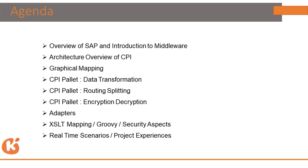We will learn about graphical mapping. In CPI we have a palette known as message mapping, which is also known as graphical mapping. We have different palettes to transfer data. In CPI we mostly use XML and JSON data, and we have different palettes like router and splitter.